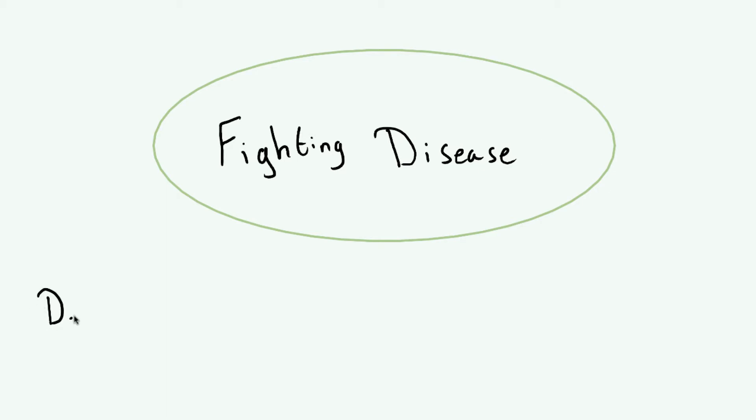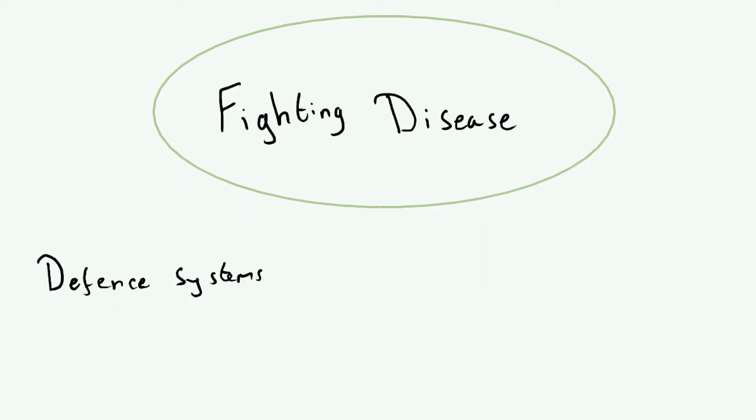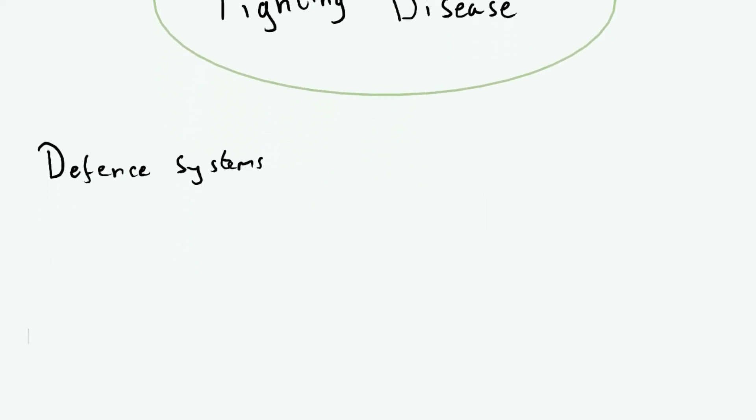Firstly, we're going to look at our defense systems. When we say defense system, we're talking about a method by which we stop pathogens from getting into our body. We have the defense system and then we have our immune system. The immune system is how we deal with pathogens after they've got into our body. The defense system is trying to stop that happening in the first place.